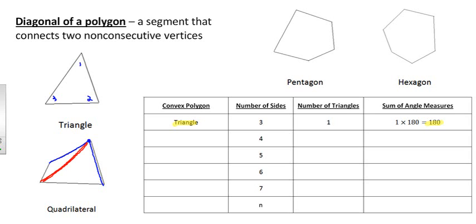All the angles of a triangle have to add up to 180. So this quadrilateral is really two triangles, which is two 180s — that's why all the angles here add up to 360. I made a little chart to help us figure out the rest. Our four-sided polygon, the quadrilateral, had two triangles, and two triangles times 180 degrees equals 360.